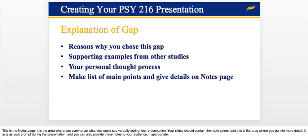In the next section, you're going to explain the gap that you identified. Why did you choose this gap? How did you identify it? Be sure to use other studies to support the existence of this research gap — this void in the literature that you identified. Also include a bullet or two about your thought process or reasoning, and you'll further elaborate on these points in the notes section. Be sure to do that — that's very important.